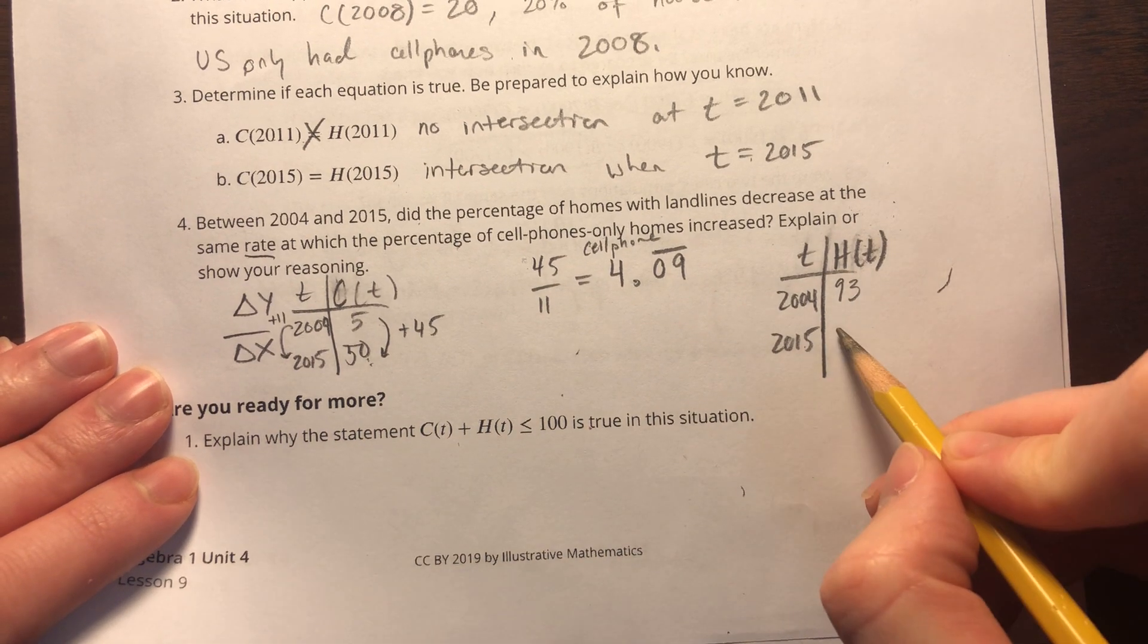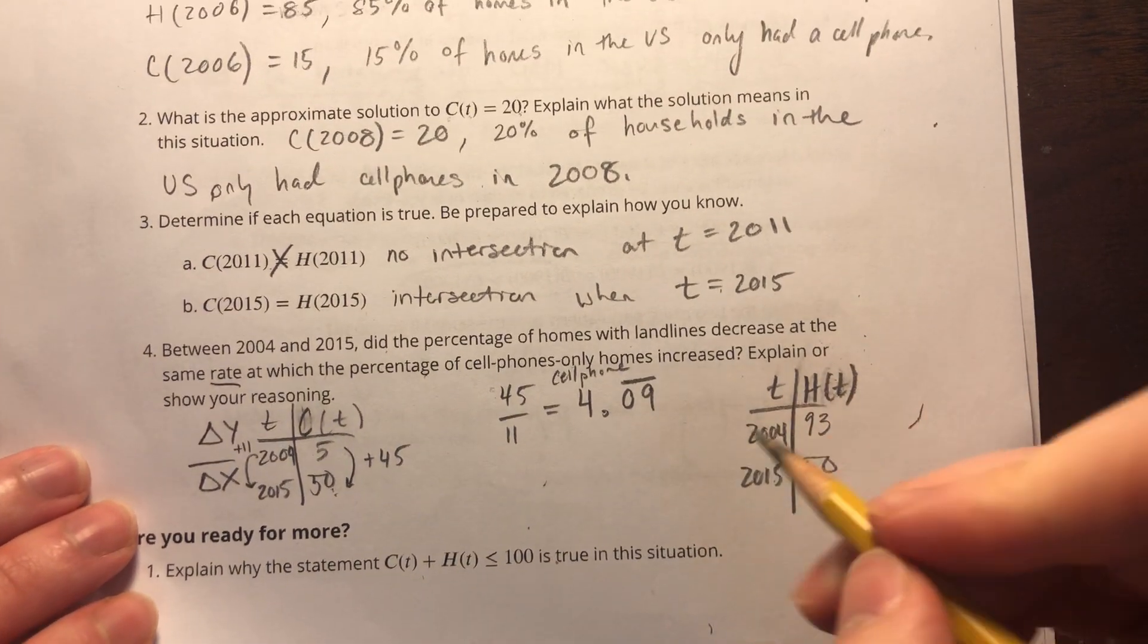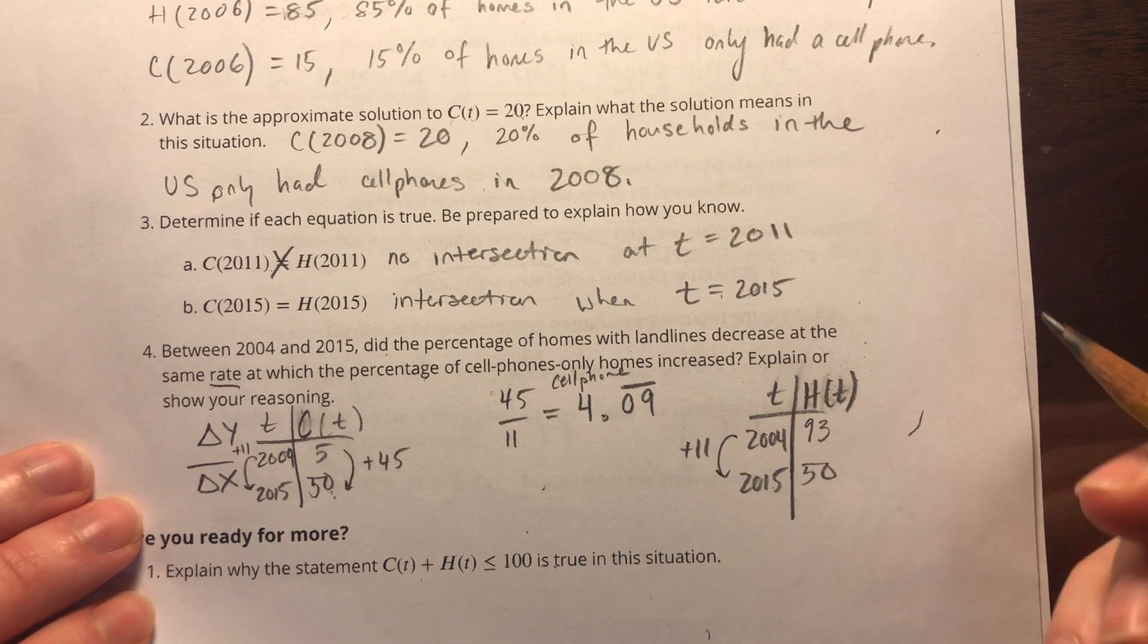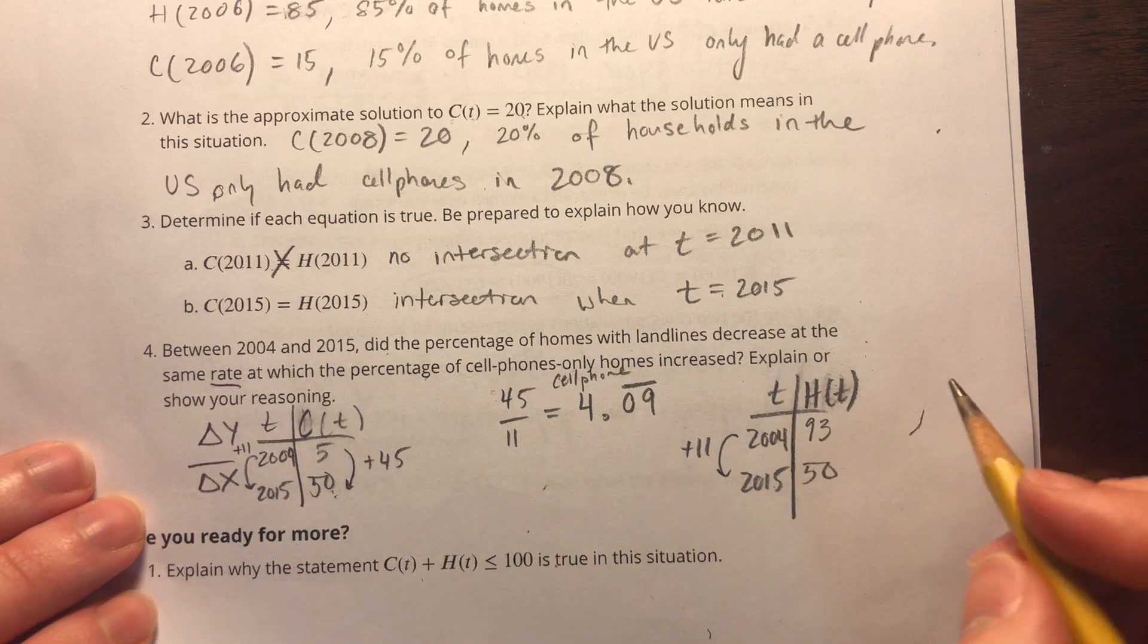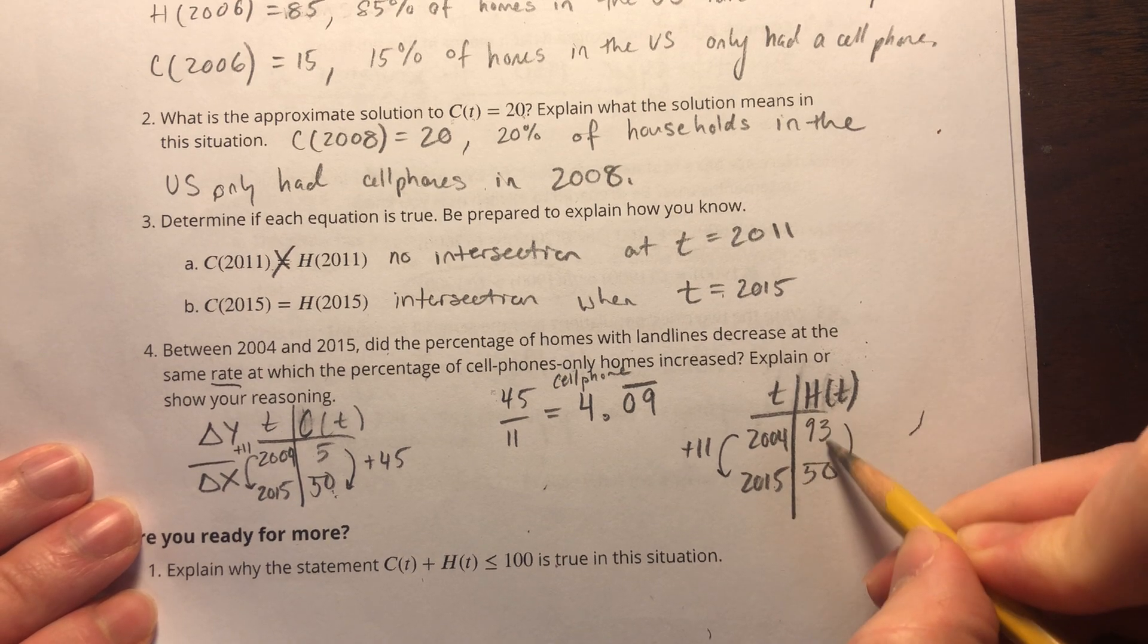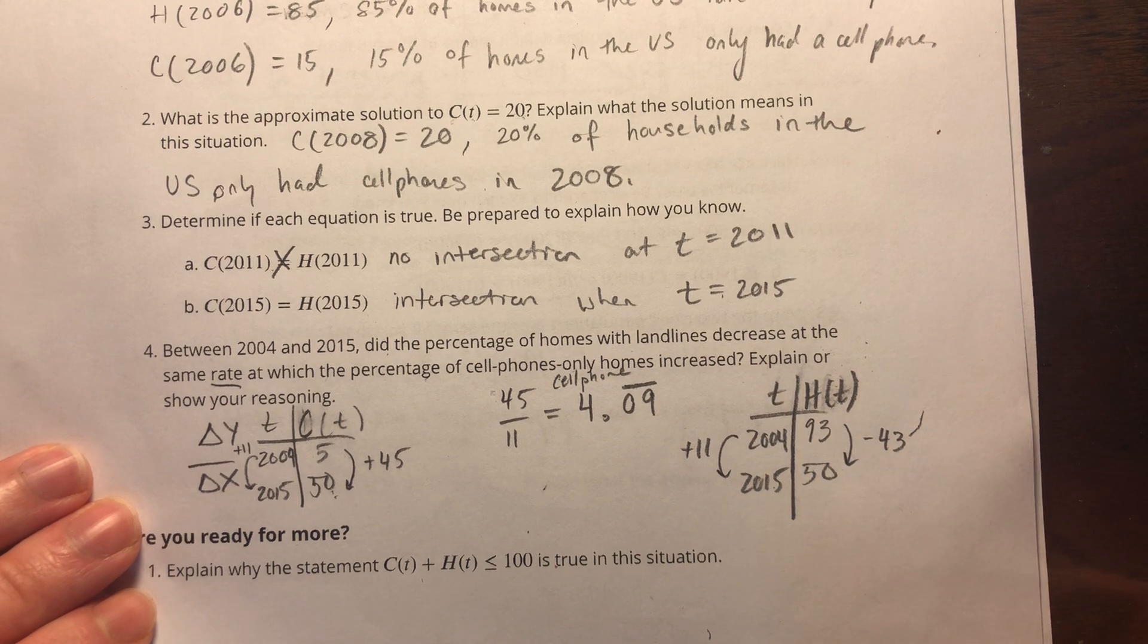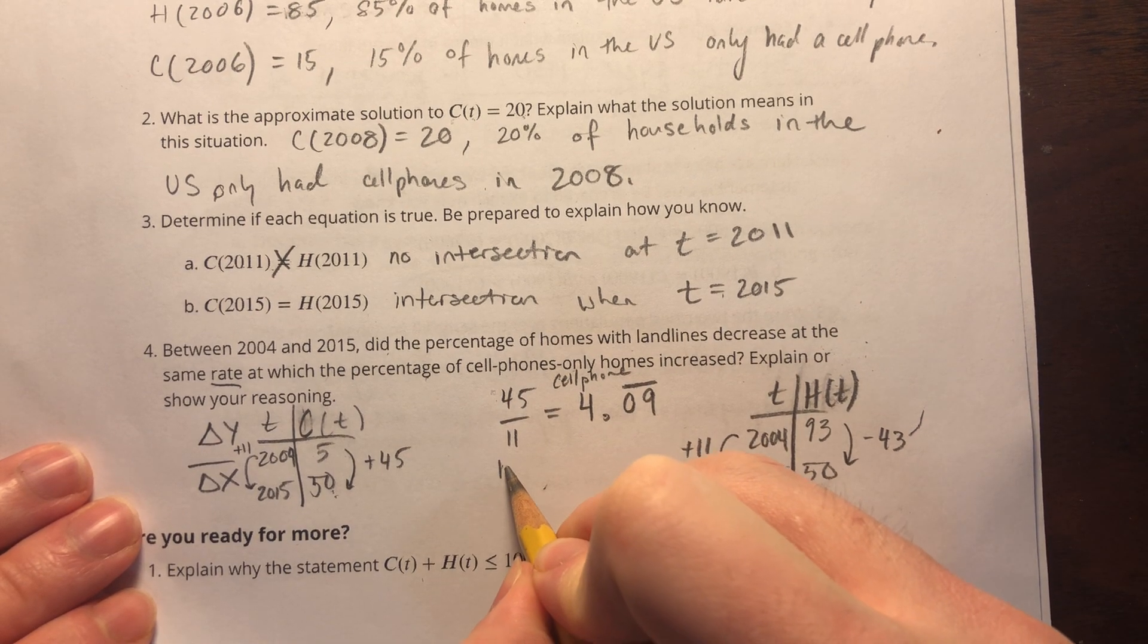Our change of x stays the same at +11 because it's the same number of years. But our change in y is going to be down 43, because 93 minus 43 equals 50. So for landlines, I'm going to write -43/11.